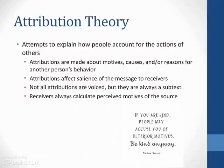Our third theory is attribution theory. Attribution theory attempts to explain how people account for the actions of others when making decisions about persuasive messages. We make attributions about other people's motives, the causes, or the reasons for their behavior. Attributions affect the salience or perceived importance of the message to a receiver. Not all attributions are voiced, but they're always a subtext for what we're thinking, because we're always calculating the perceived motives of the source.